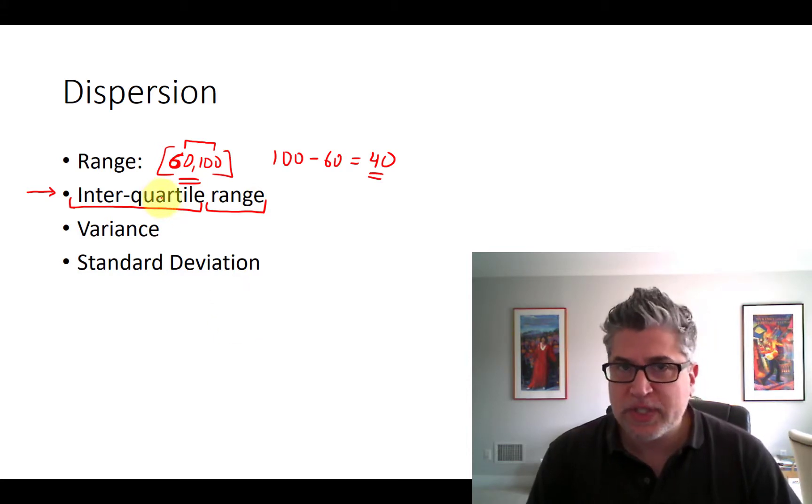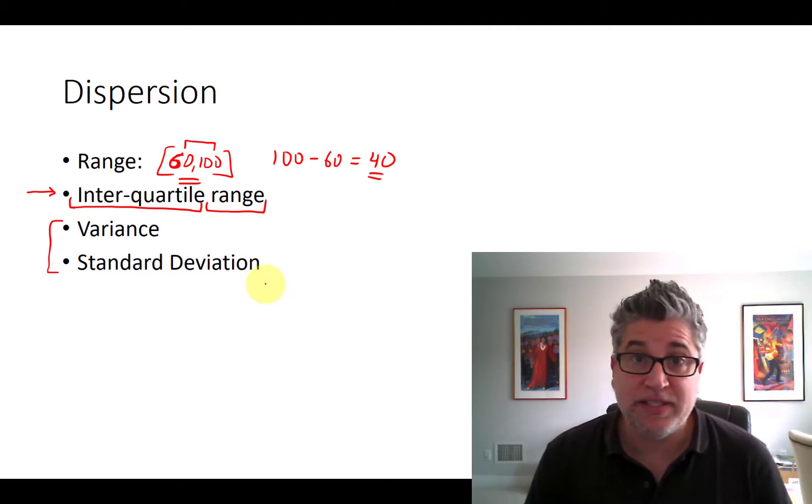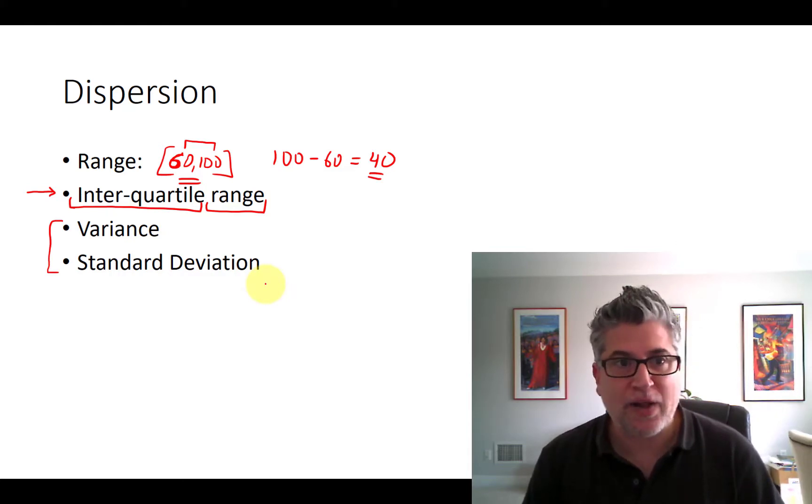This one is interesting. It's not the most commonly used, either by people or by statisticians. These two really are the statisticians' bread and butter. Variance and standard deviation along with the mean will get you through 90% of any statistics project you need to undertake. But before we get there, let's just do interquartile range.